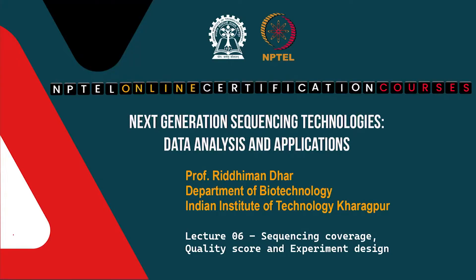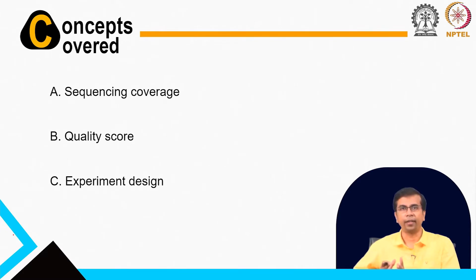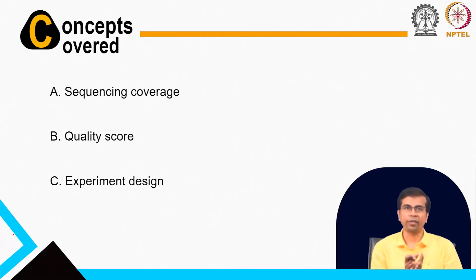We have so far discussed all the sequencing technologies that we use today. In this class we will be talking about some very important technical terms that we will be using throughout this course. The first one is called Sequencing Coverage, which is very important for designing any next generation sequencing experiment. And we will be talking about Quality Score, which is very important for interpreting the data. Finally, we will have some discussion on experiment design.